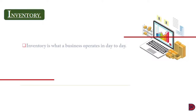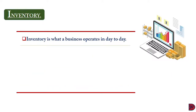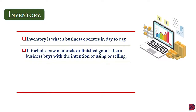Inventory is what a business deals in during its day-to-day operations. So if a business is set up to sell cars, the cars will be their inventory. If they are set up to sell stationery, that will be their inventory. It also includes raw materials and finished goods that a business buys with the intention to sell or use.